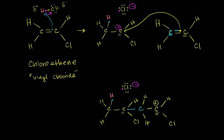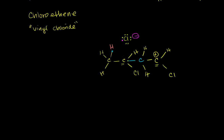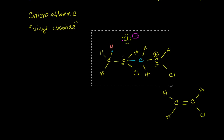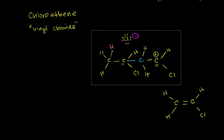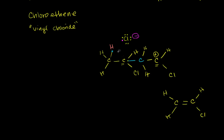So what could happen next? Well, we have more vinyl chloride sitting around. Let me draw another vinyl chloride. And I think you see where this might be going — how this could keep on going and going and going. This new vinyl chloride could give an electron to this carbocation and form a bond, or we could have the same process happen over and over again.